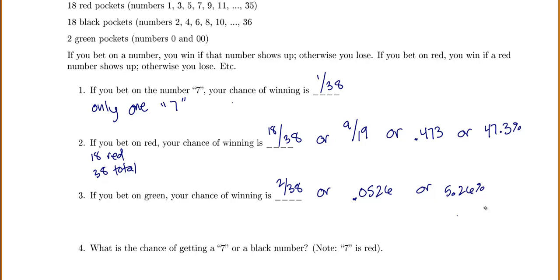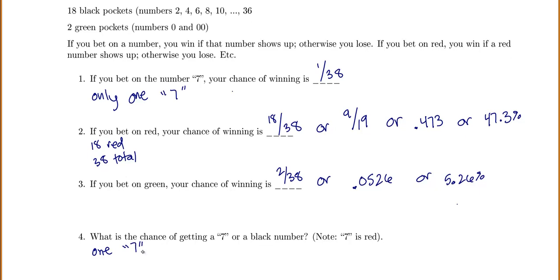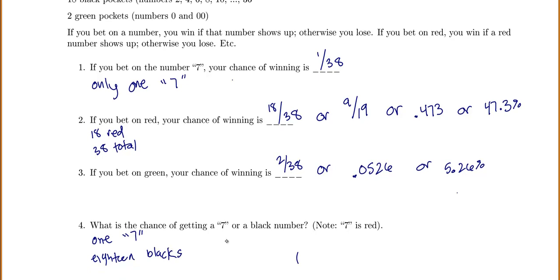Number four asks: what is the chance of getting a seven or a black number? Keep in mind that seven is red, so there is one seven plus 18 blacks, giving us 19 ways to get what we want out of 38.